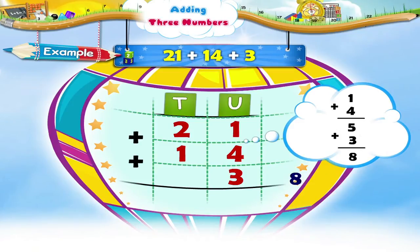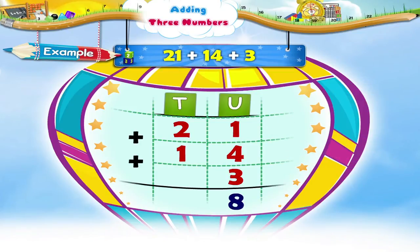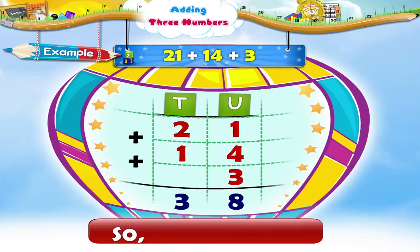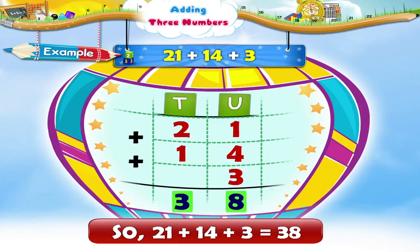We write eight in the units place of the sum. Now the tens place shows two plus one which equals three. We write it in the tens place of the answer. So twenty-one plus fourteen plus three equals thirty-eight.